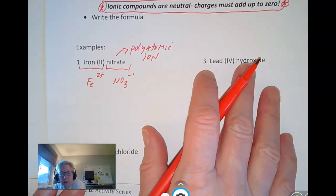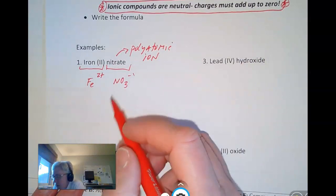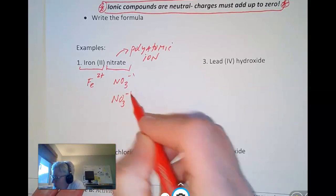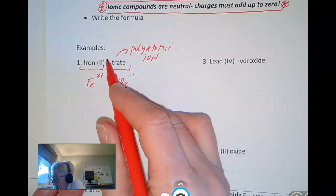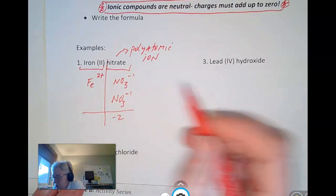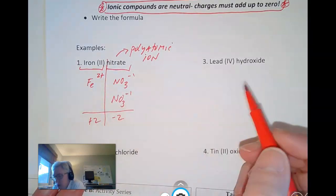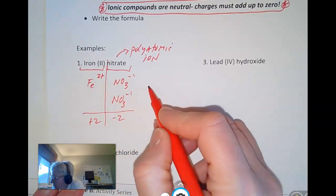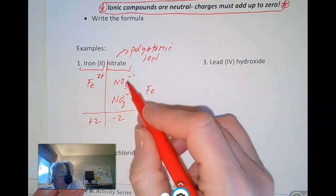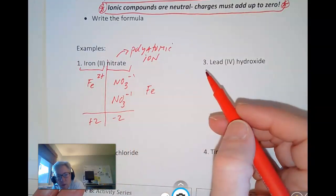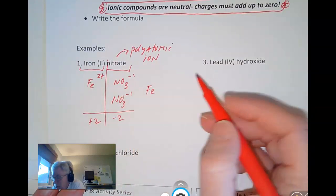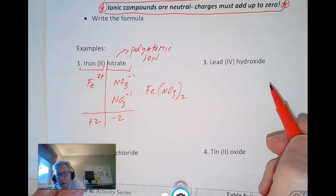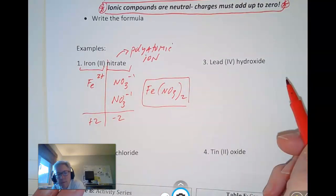So NO3 minus 1. And then you look at it and you say to yourself, how many of each do I need so the whole thing adds up to zero? And hopefully you realize that you need one more nitrate because now this side is a minus 2 and this side is a plus 2. And so now you can write your formula. You have one iron and two nitrates. So write iron. And then remember, if you have more than one copy of a polyatomic ion, you've got to put that in parentheses. So NO3, and you put the little 2 on the outside. And that is the formula.